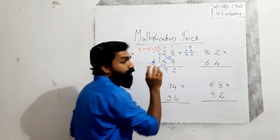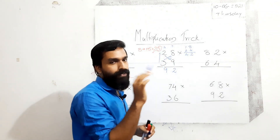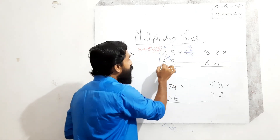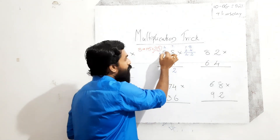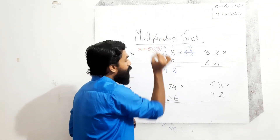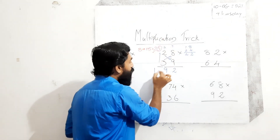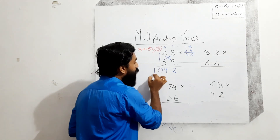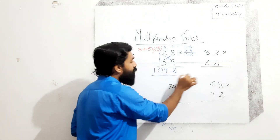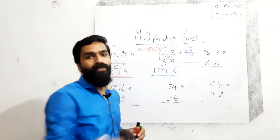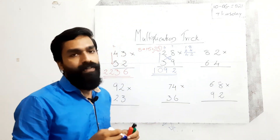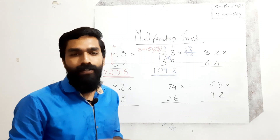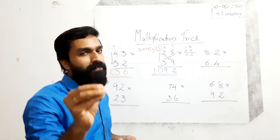Next: tens place into tens place — 3 into 2 is equal to 6. 6 plus carry 4 is equal to 10. Write 10 here. So the answer is 1092. This method is very simple compared to the regular method.